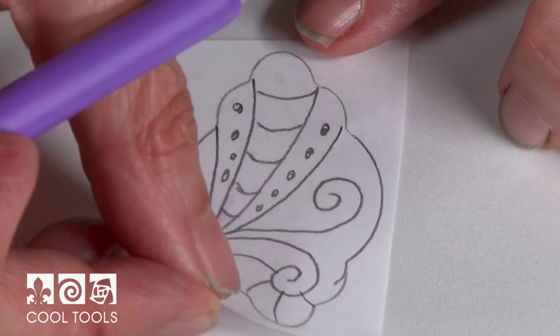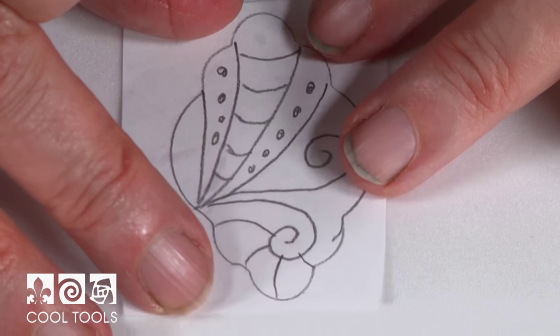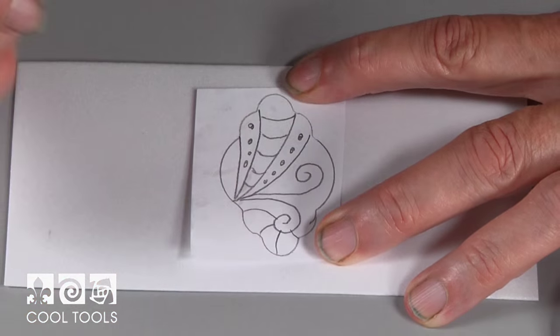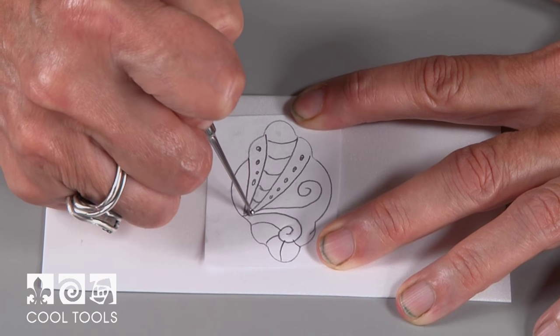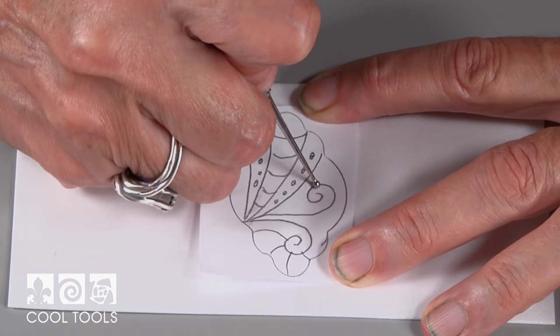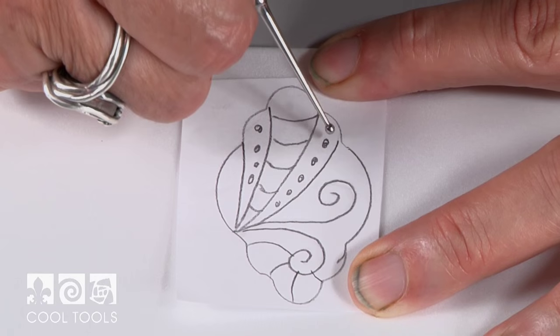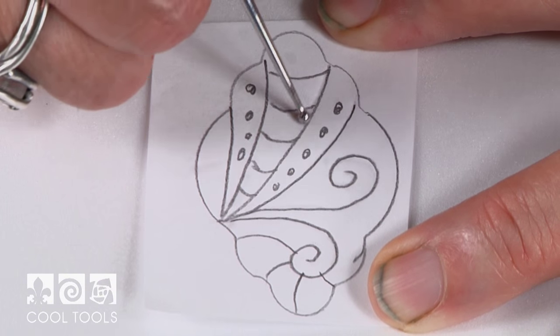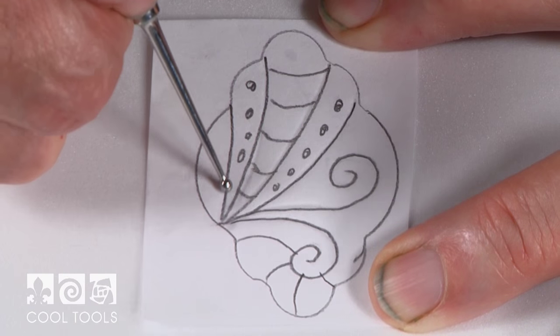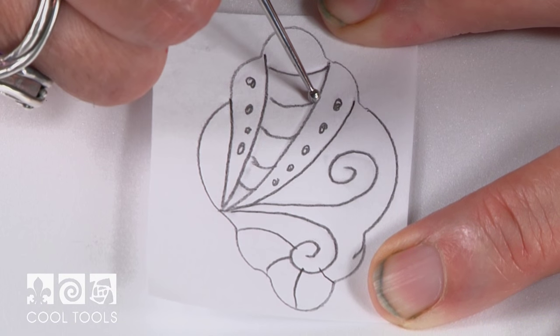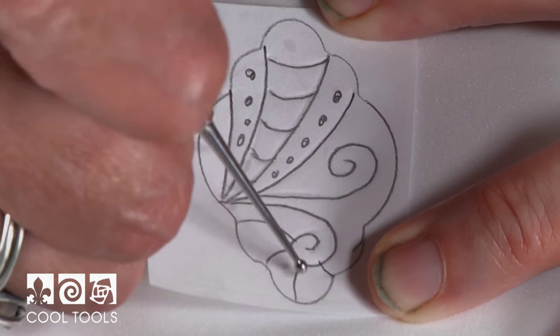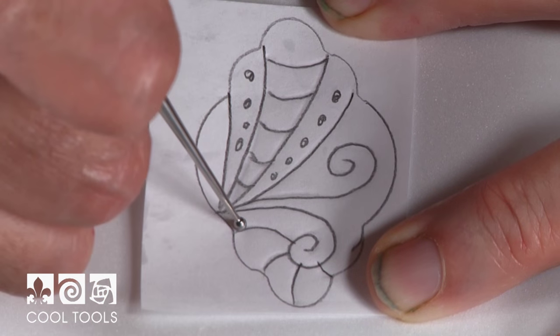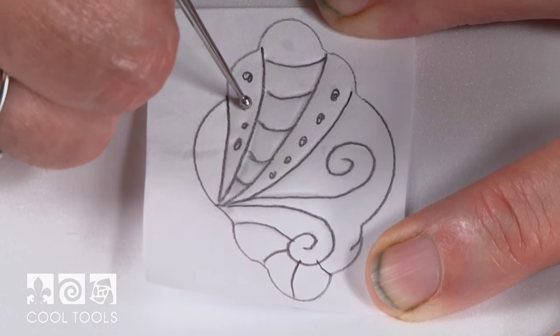Once that's done, I can bring my design in and hold it over my outline and just begin to trace over it. And this will be enough to create an impression in the piece. And this just means you can play with your design before you start and be more comfortable with it before you're actually impressing the scratch foam.